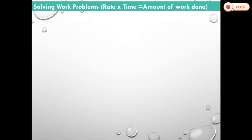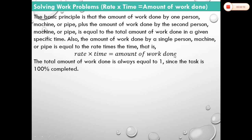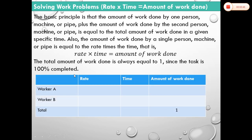Another type of problem is work problems. The basic principle is that the amount of work done by one person, machine, or pipe plus the amount of work done by a second person, machine, or pipe is equal to the total amount of work done in a given time. Also, the amount of work done equals rate times time. The total amount of work done is always equal to 1, since the task is 100% completed. In solving work problems, we set up a table where R × T = amount of work done by worker A, worker B, and their combined total equals 1.